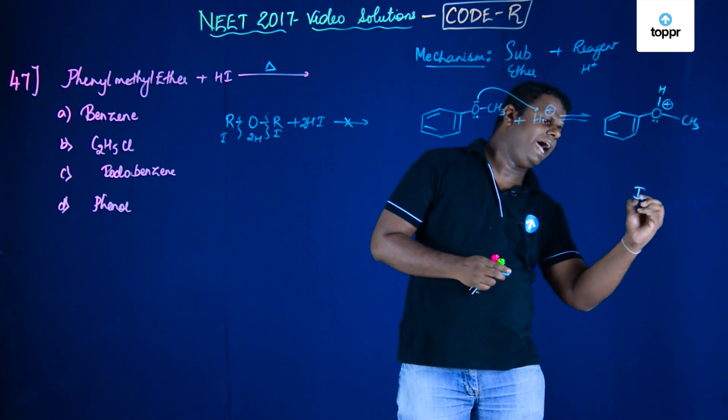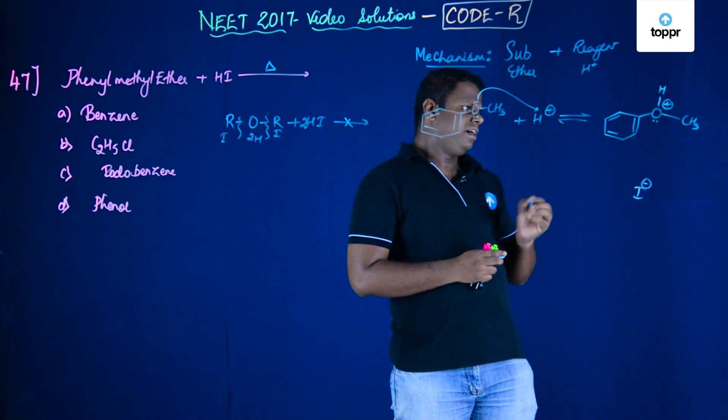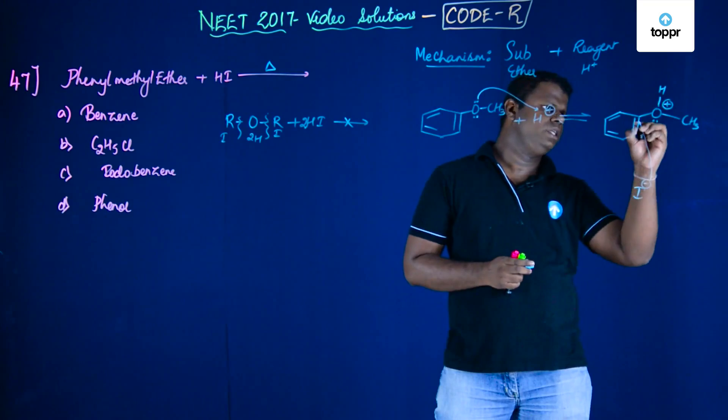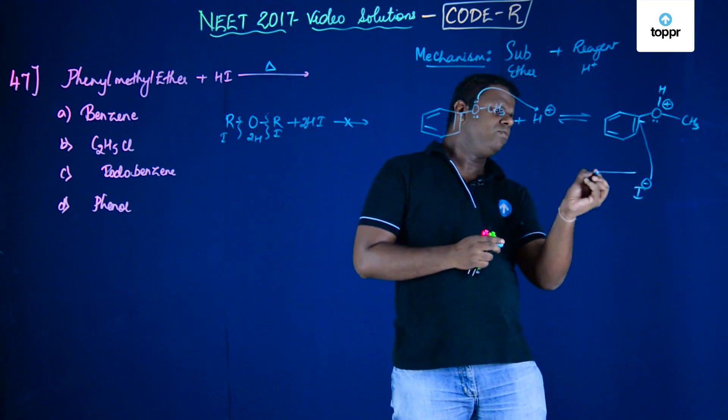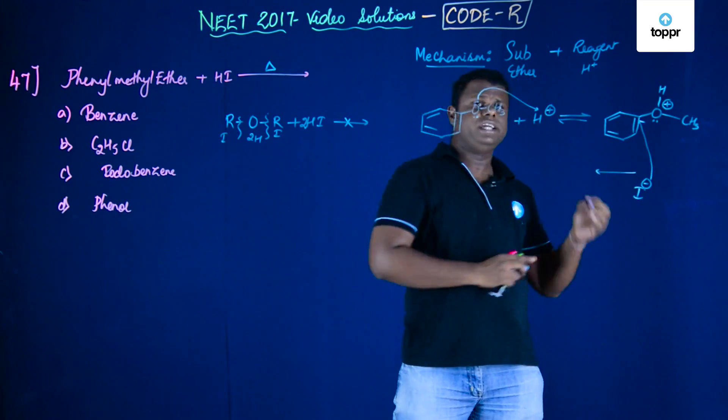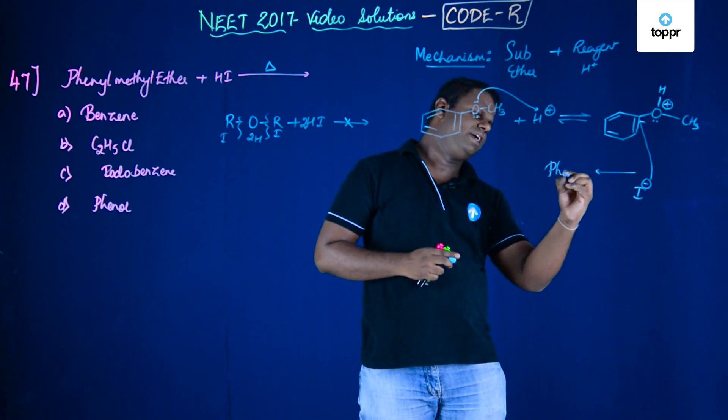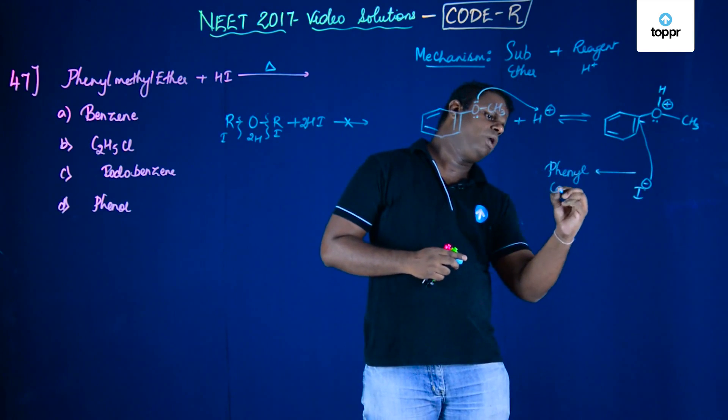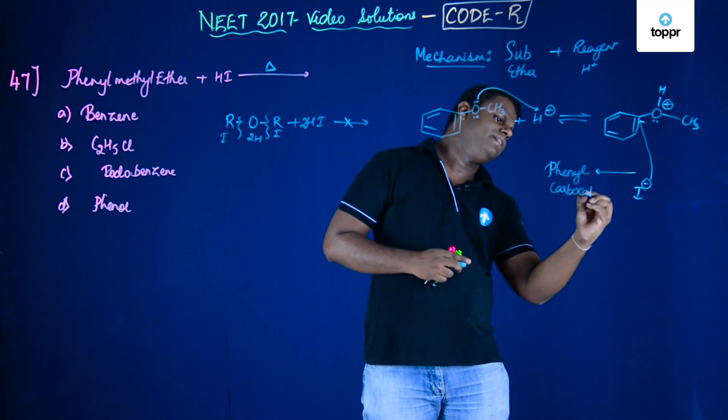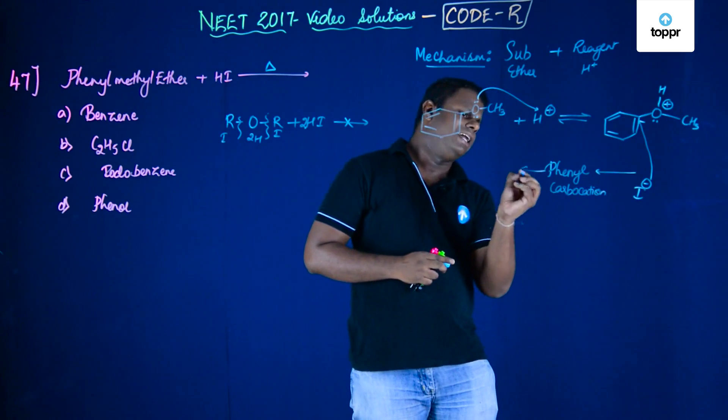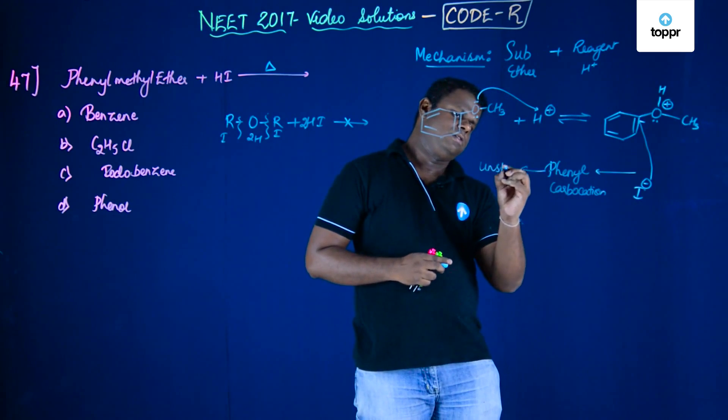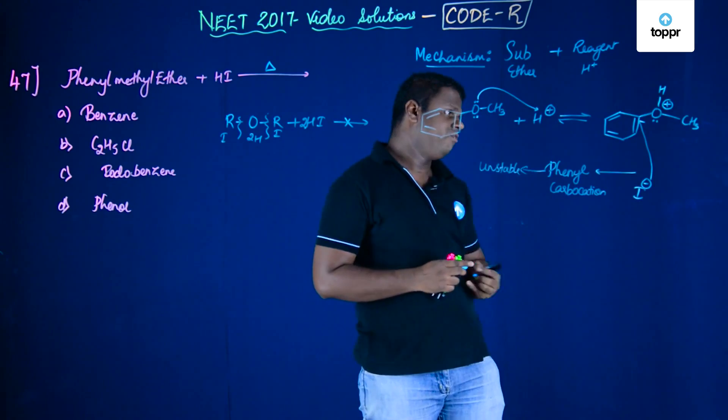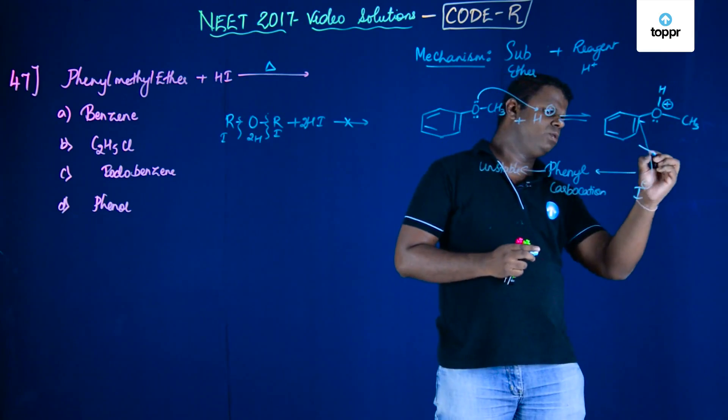Now, this I- can attack in two different ways. Let's say if this attacks to this carbon, what would happen? In this case the intermediate which would be generated would be phenyl carbocation. And this phenyl carbocation is unstable. If this is unstable it cannot be formed. This route is not proper.